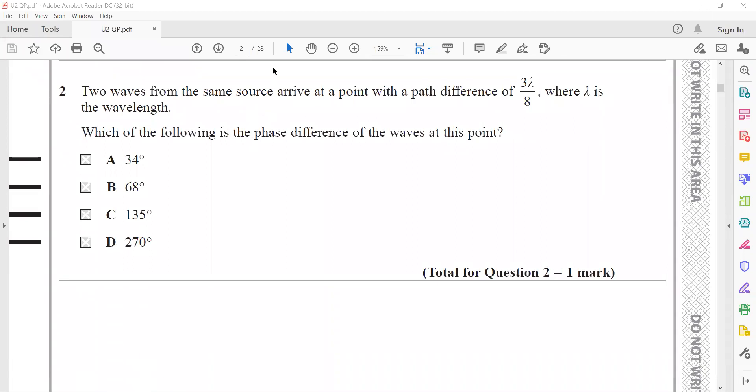Two waves from the same source arrive at a point with a path difference of 3 lambda by 8, where lambda is the wavelength. Which of the following is the phase difference? The relation between path difference and phase difference: when there's a complete path difference of one wavelength, the phase difference is 360 degrees or 2 pi radians.